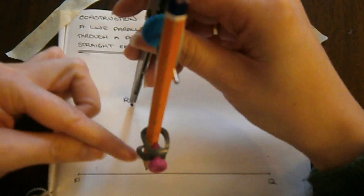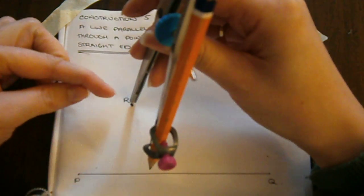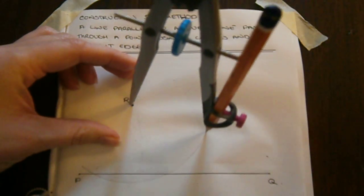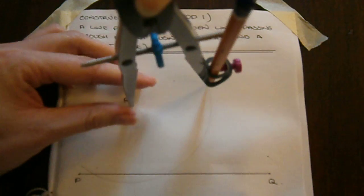We take our compass and place it on point R. Make sure the distance between the point and the pencil is greater than the distance between R and the line PQ, and we swing an arc so that it crosses PQ at two points and bring it right up so it is to the right of our point R.